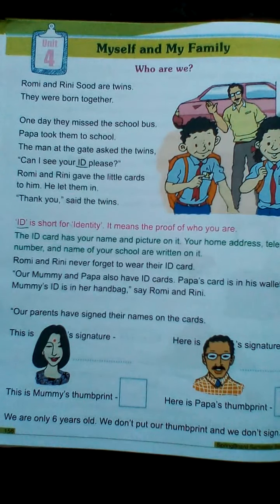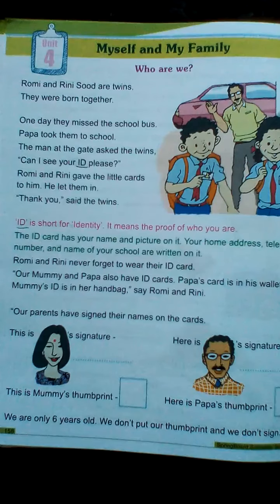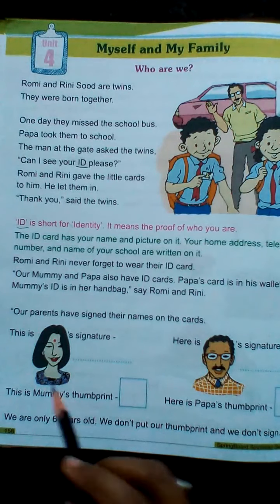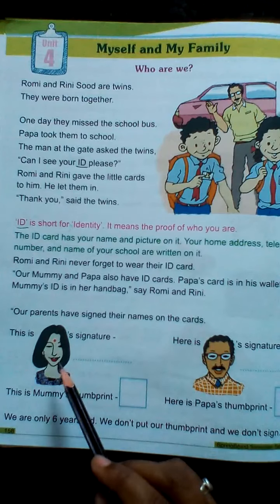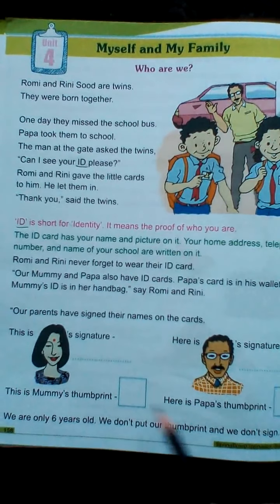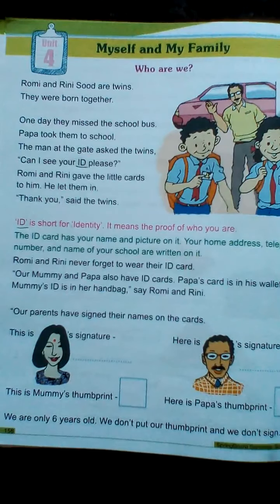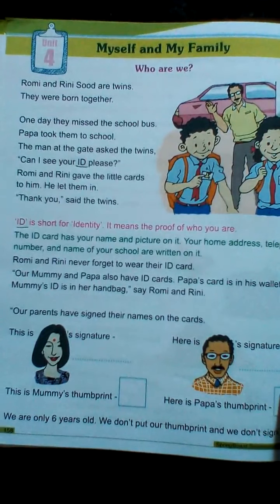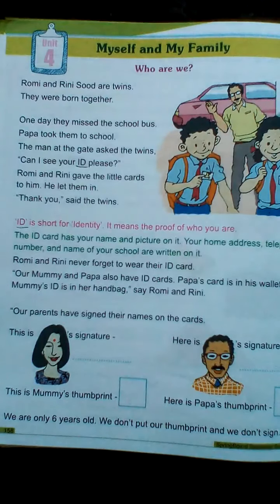Papa's ID card is in his wallet and Mummy's ID is in her handbag. Our parents have signed their names on the cards. This is mother's signature and here is father's signature. Take your mother's signature and father's signature on the given place, and take their thumbprints in the box. Since you are only 6 or 7 years old, you don't put your own thumbprint and you don't sign.